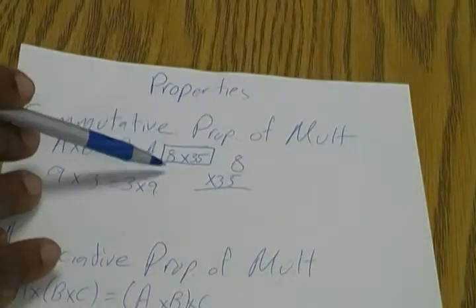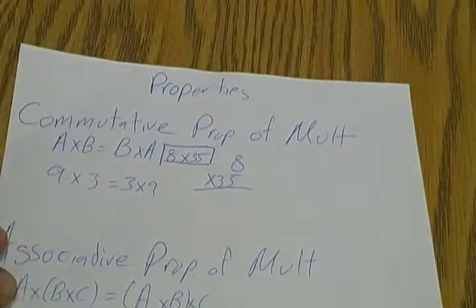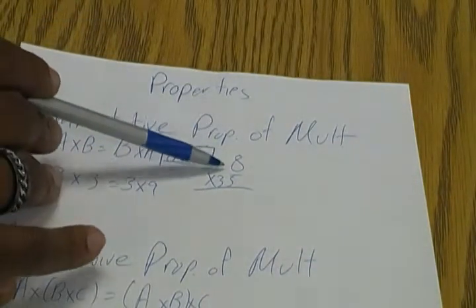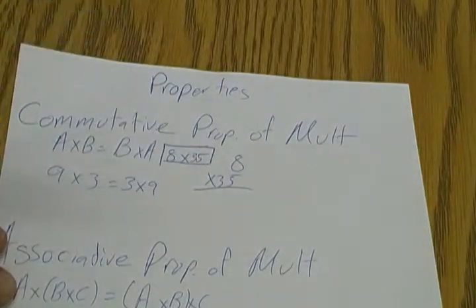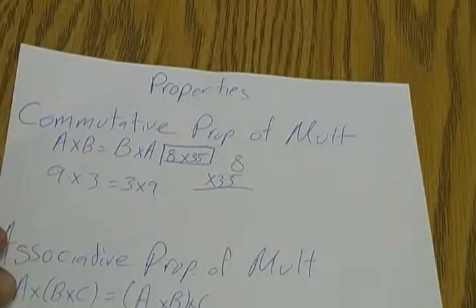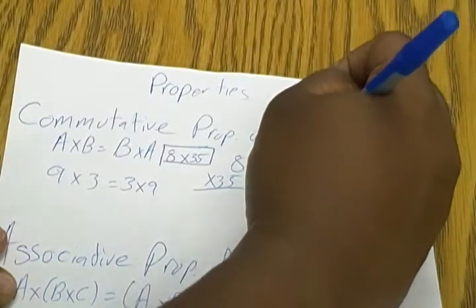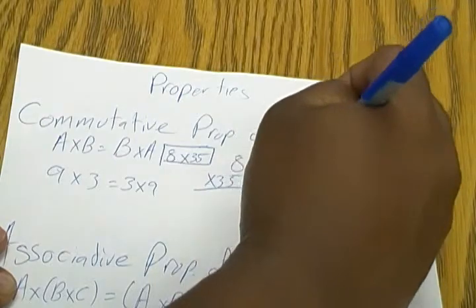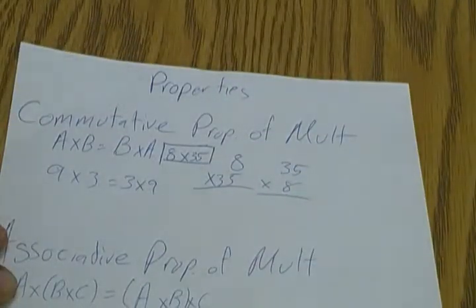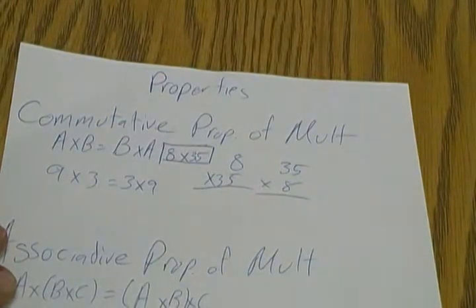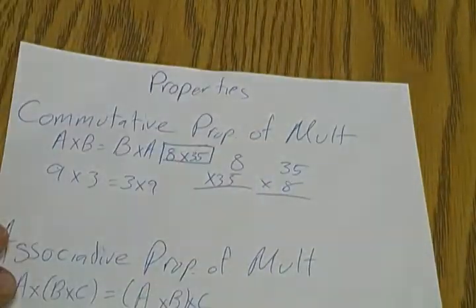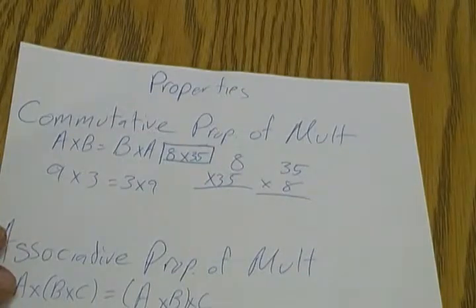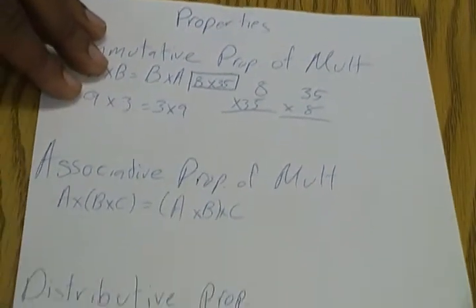Let's say for instance we have a problem like 8 times 35. Now technically 8 times 35 should be written like 8 on the top times 35 on the bottom. But we can change this around using the commutative property of multiplication and we can put 35 on the top and 8 on the bottom. It makes it a little bit easier to solve for us. It still gets the same product. So no matter which way we change it around, we still get the same exact answer.